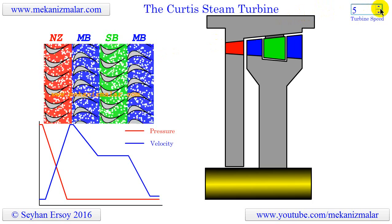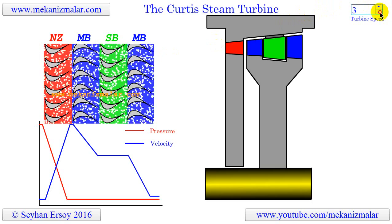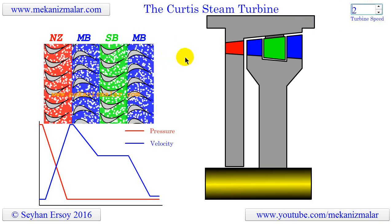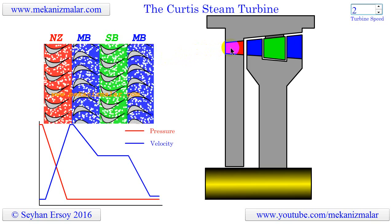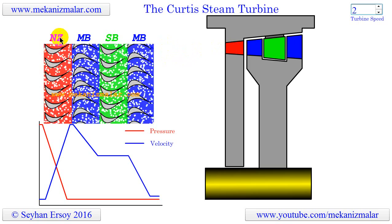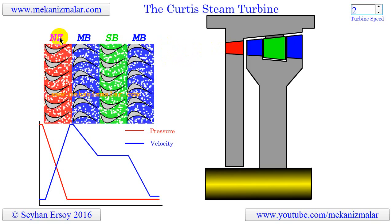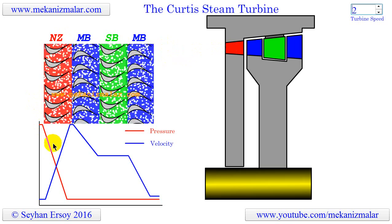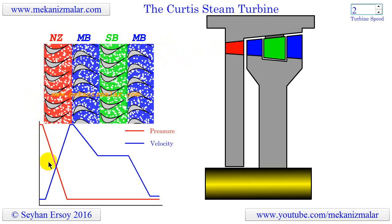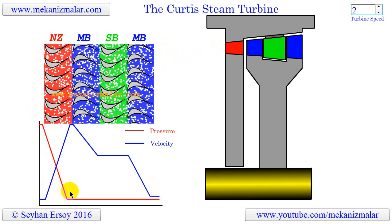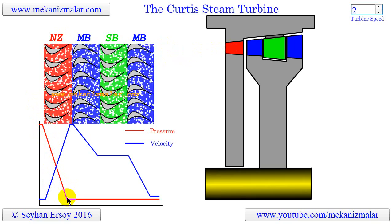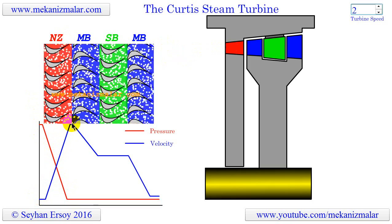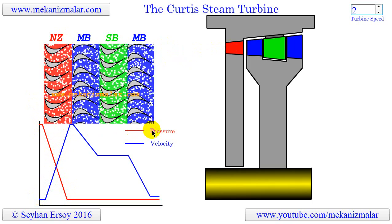The first stage, shown in red, is where the nozzles are located, indicated by the characters NZ. Here, the steam's potential energy is converted to kinetic energy. As you can see in the plot, this stage corresponds to a substantial pressure drop, which in turn increases the velocity of the steam proportionally.